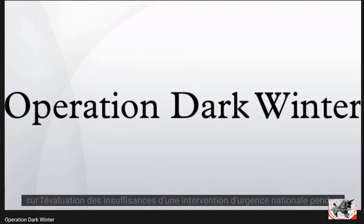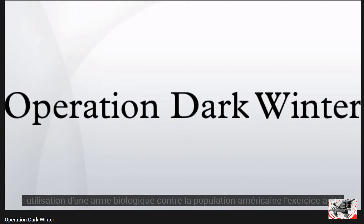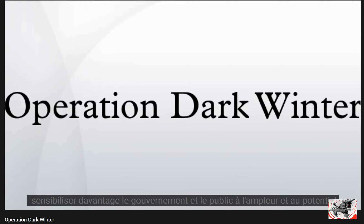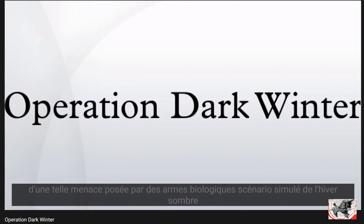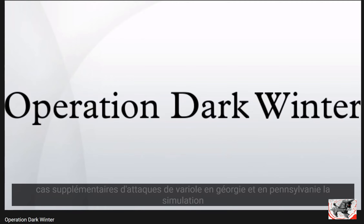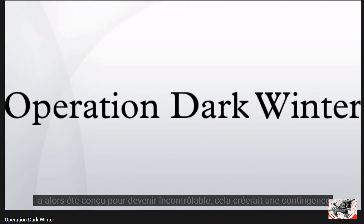Dark Winter was focused on evaluating the inadequacies of a national emergency response during the use of a biological weapon against the American populace. The exercise was intended to establish preventive measures and response strategies. Dark Winter's simulated scenario involved an initial localized smallpox attack on Oklahoma City, Oklahoma, with additional cases in Georgia and Pennsylvania. The simulation was then designed to spiral out of control.